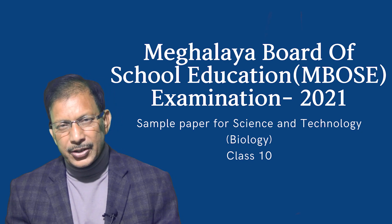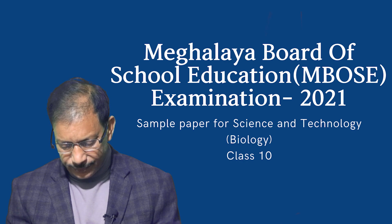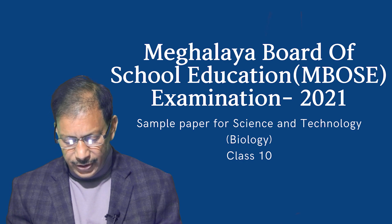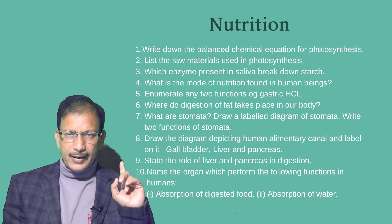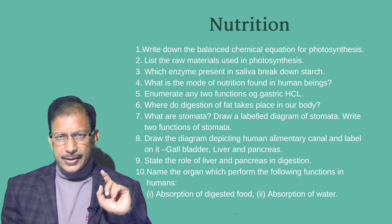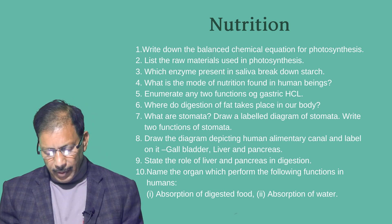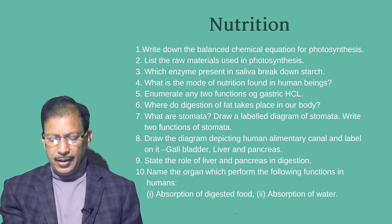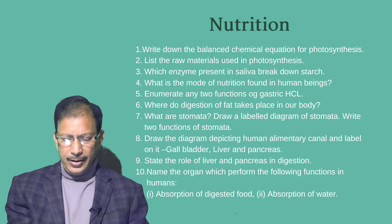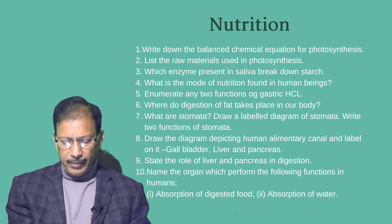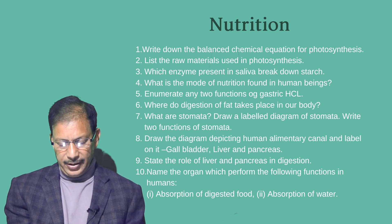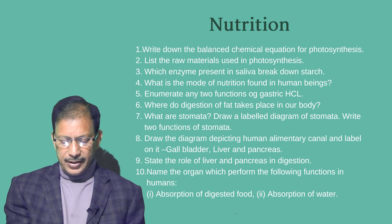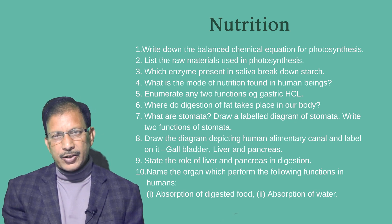We'll start from the chapter Nutrition. Question 1: Write down the balanced chemical equation for photosynthesis. Next: List the raw materials used in photosynthesis. Then: Which enzyme present in saliva breaks down starch? What is the mode of nutrition found in human beings? Enumerate any two functions of gastric HCl (hydrochloric acid).